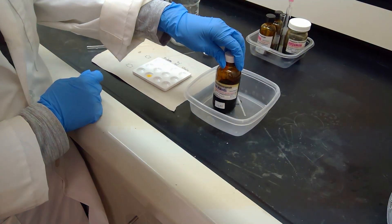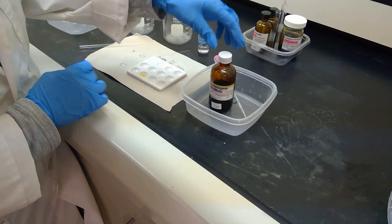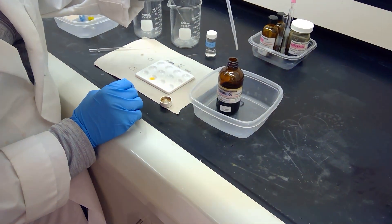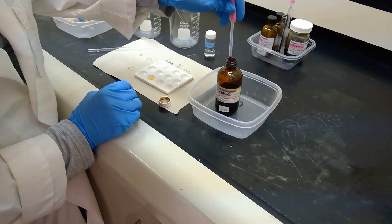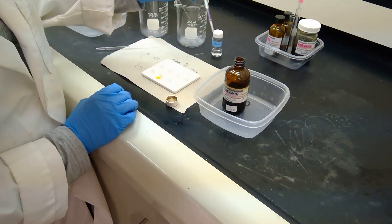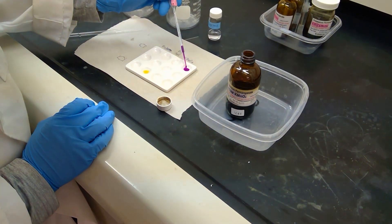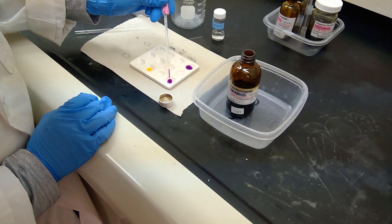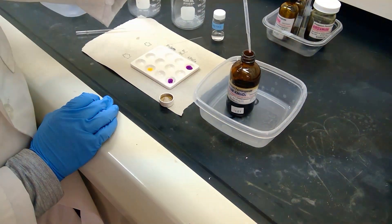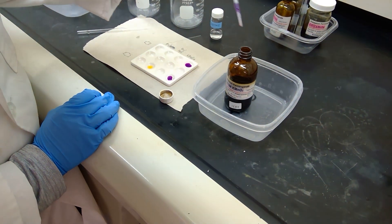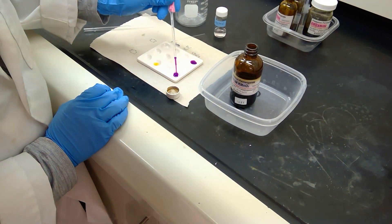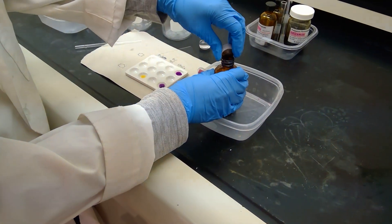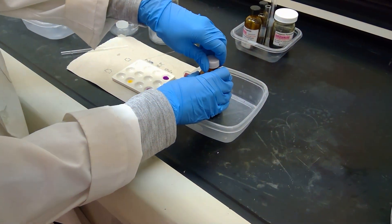For our next chemical test, we will be using some potassium permanganate. We're going to test both of the hydrocarbons from before. I'm going to take a couple of drops of potassium permanganate. Once I get it onto the spot plate, I want you to notice the color. We have a nice purple color going on. I have five drops of potassium permanganate into each of the wells.